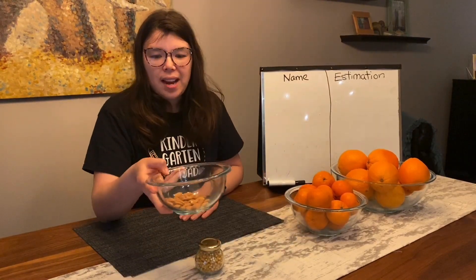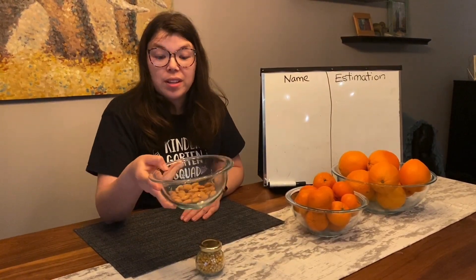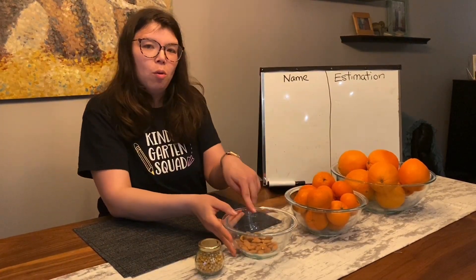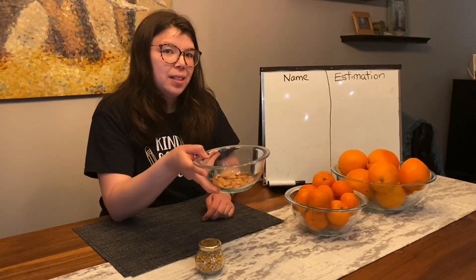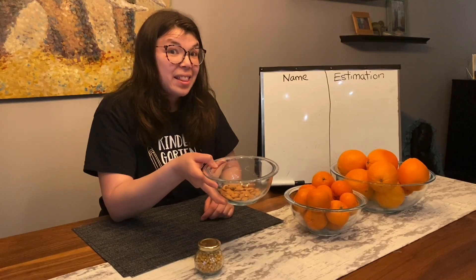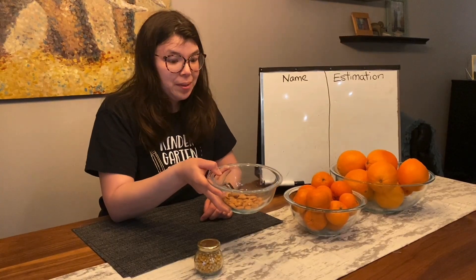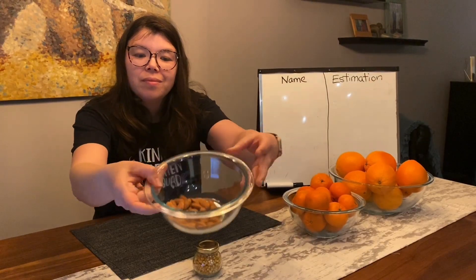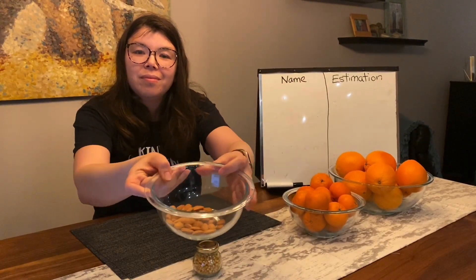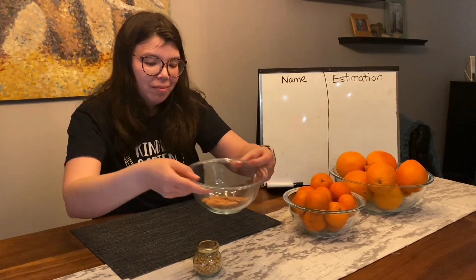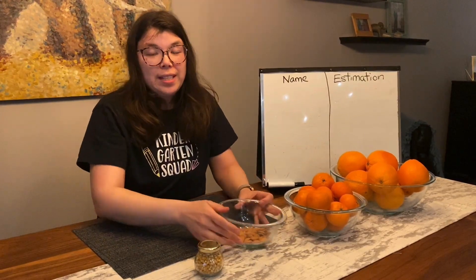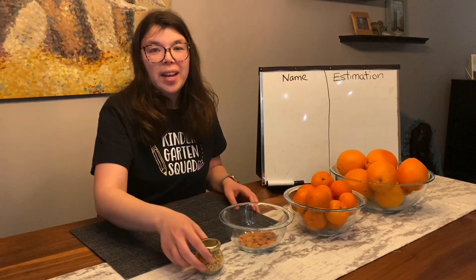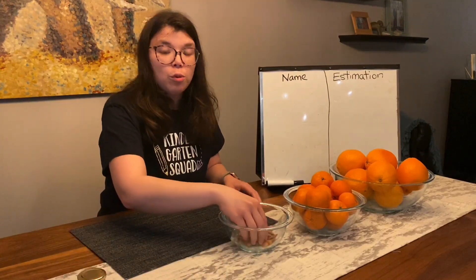The last bowl is a little tough. This bowl is filled with some almonds. It's the smallest of the three bowls, so some kids might think that it actually has the least amount. What do you think? Since these are really small and there looks like there's a lot of them, I'm going to count them by putting them into groups of ten.